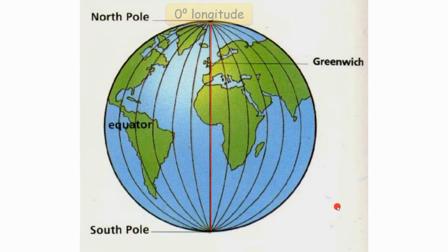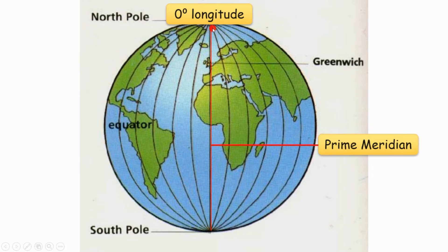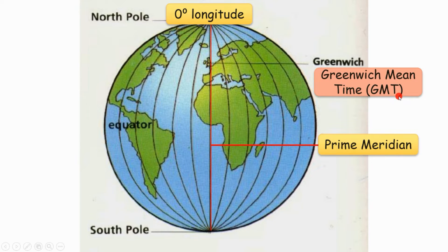The line at 0 degrees longitude — the middle line that separates the Earth into two parts — is called the prime meridian. As you can see, this line goes through Greenwich in London. So the time here is called Greenwich Mean Time, or in short form, GMT. We can calculate the time for different time zones based on GMT.